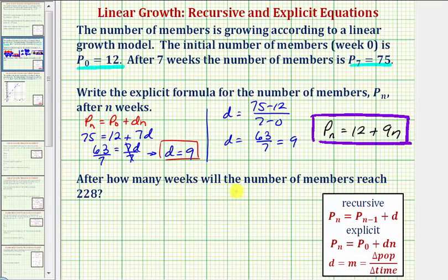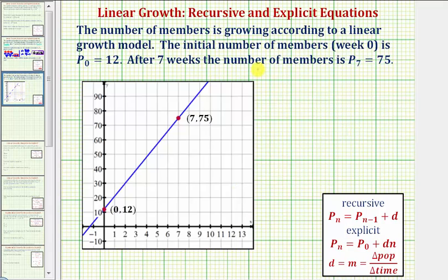Before we look at our next question though, let's look at this graphically. On the coordinate plane, P₀ = 12 corresponds to the ordered pair (0, 12), and P₇ = 75 corresponds to the ordered pair (7, 75). If we were to graph the explicit equation that we just found, it would be this blue line passing through these two points.